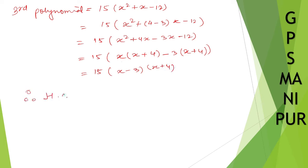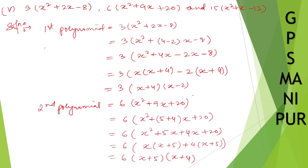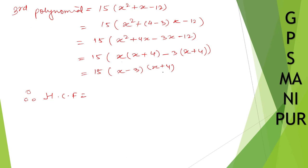Therefore the HCF is found by selecting what is common in all three polynomials. You can see that (x + 4) appears in all three, and 3 is also common between them. So 3 and (x + 4) are taken as common, giving HCF = 3(x + 4).